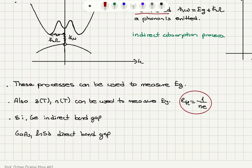Examples of indirect band gap semiconductors include silicon and germanium. Direct band gap semiconductors include gallium arsenide and indium antimonide, and direct band gap semiconductors are used to make solid-state lasers — an important application.